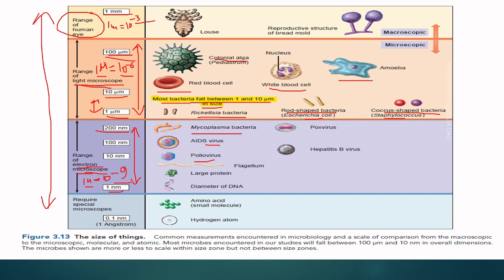By electron microscope we can see viruses and Mycoplasma. The diameter of DNA is also about 1 nanometer, which we can also see by electron microscope. These are the size ranges used to observe microorganisms — whether human cells, bacterial cells, or viruses.